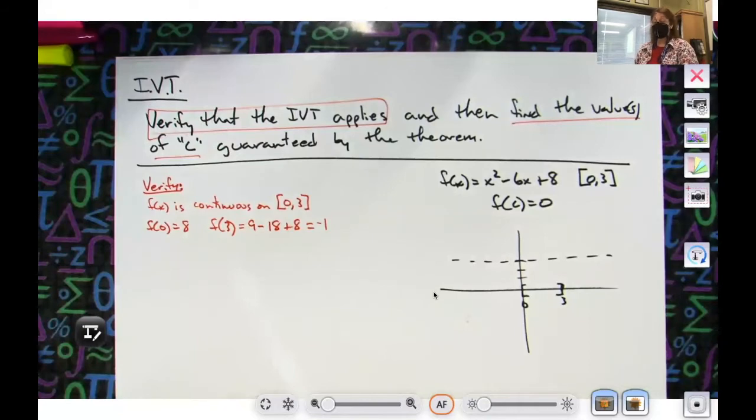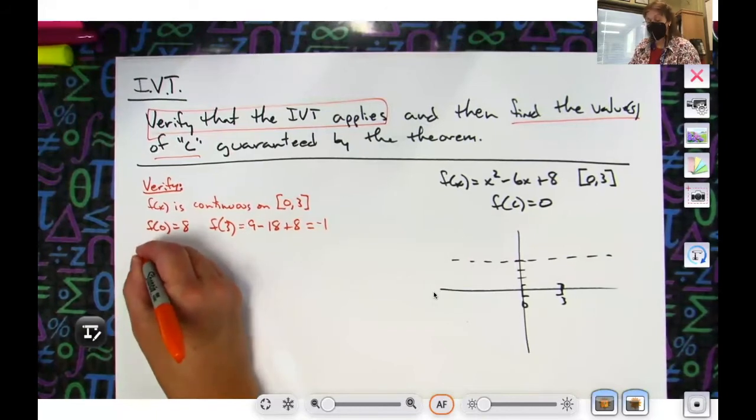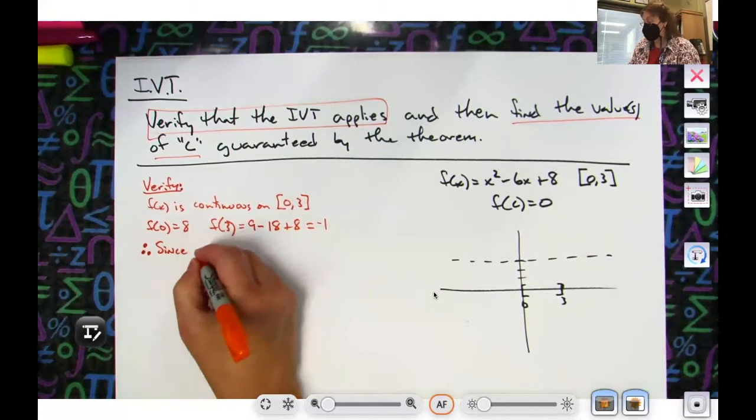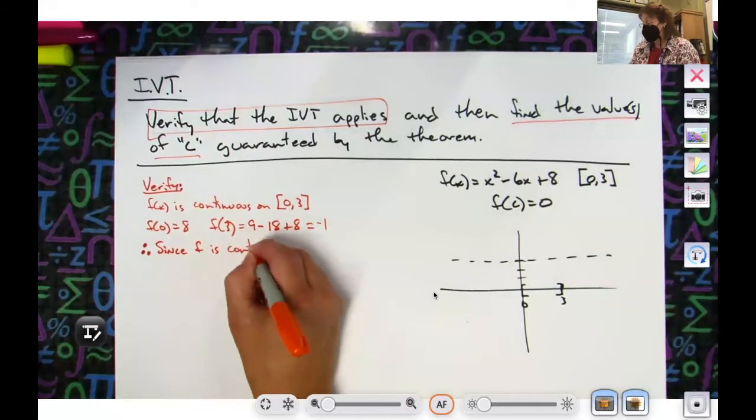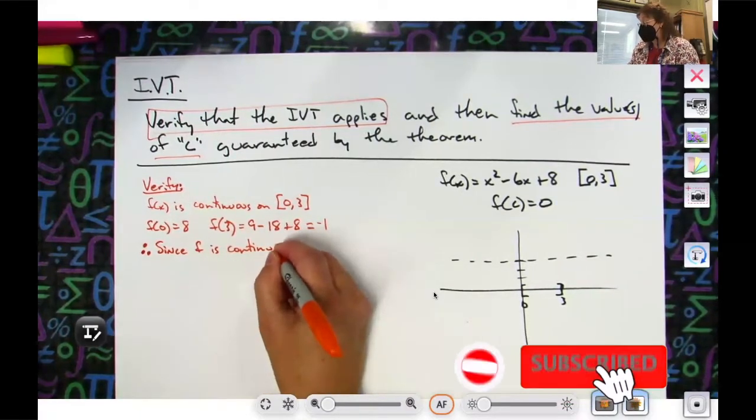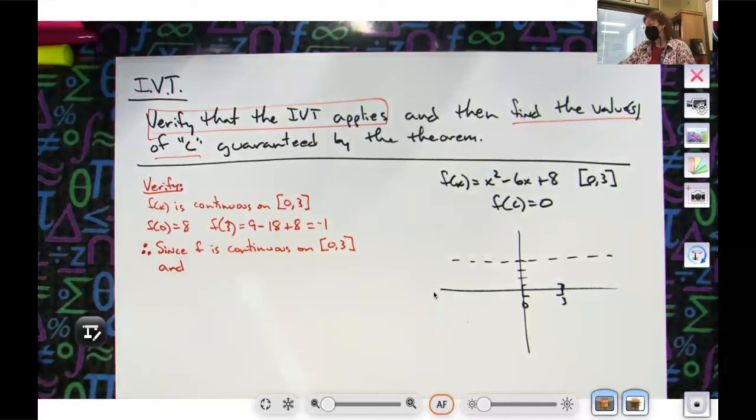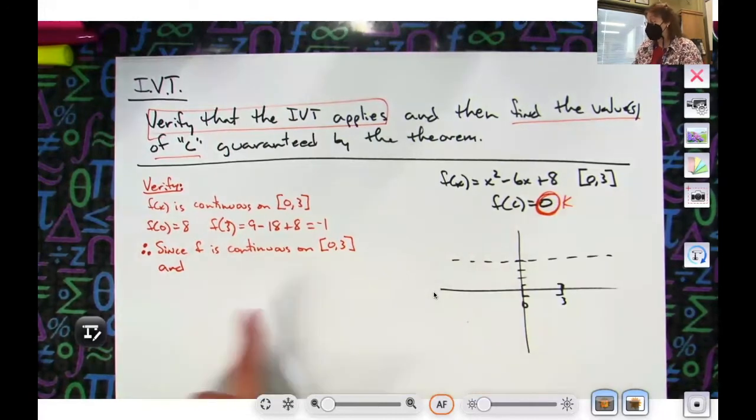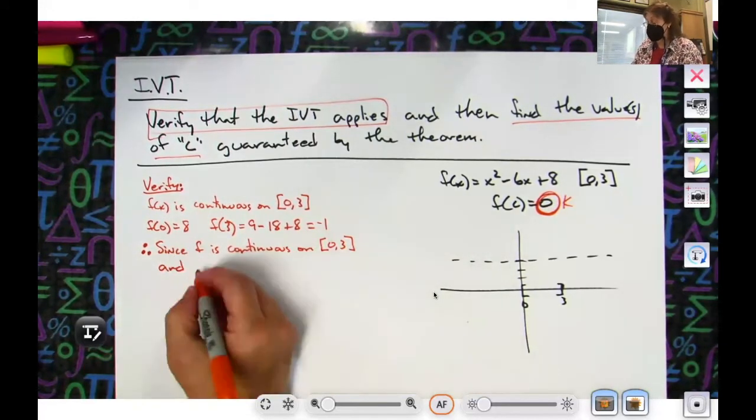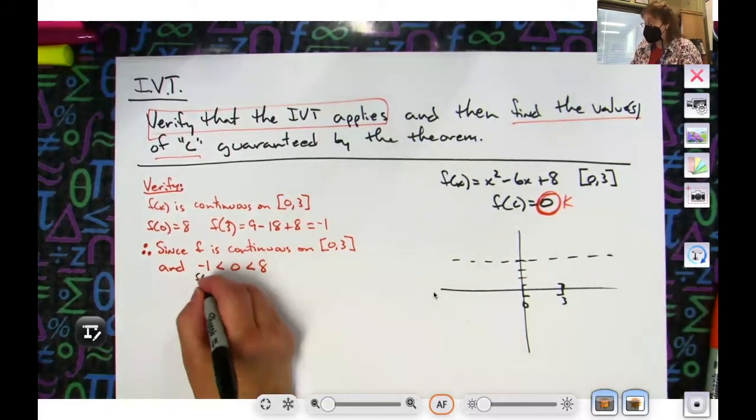Okay, so I got a positive number and a negative number, so so far we're really good. Now let's draw a conclusion from what we've just analyzed. Therefore, since f(x) is continuous on that closed interval, and since zero—my k value, my zero right there—is in between negative one and eight, then I should be good to say the theorem applies. So I'm going to write negative one is less than zero is less than eight.